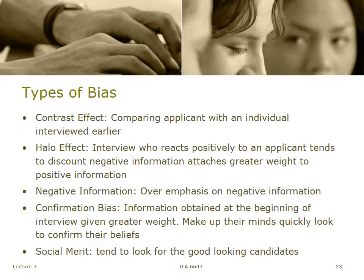The final bias is called social merit — as hard to believe as it is, it's still a form of bias. We tend to look for good-looking candidates, those with a nice complexion, a pretty smile, beautiful hair — and they tend to get more positive ratings. The only way to get around social merit bias might be to put the candidate behind a wall so all you can hear is their voice. Be aware: it's not about how they look. Listen to the substance of what they're saying and make a decision based on whether the candidate is a good match for your school.